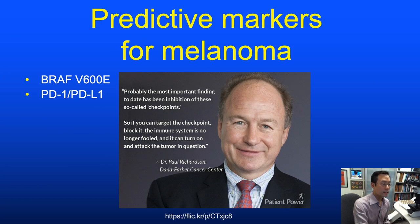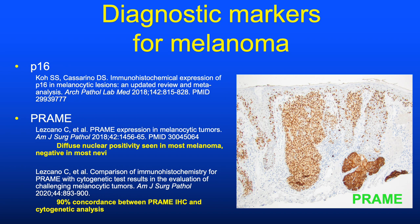In the age of targeted anti-cancer therapy, there are predictive markers for melanoma ordered regularly in patients with advanced melanoma. Mutation analysis for BRAF V600E can be approximated using an immunohistochemical stain, and checkpoint inhibitor markers—PD-1 and PD-L1 immunostains—are very frequently requested. As diagnostic dermatopathologists, we are particularly excited about diagnostic markers for melanoma, which have been very few and far between.